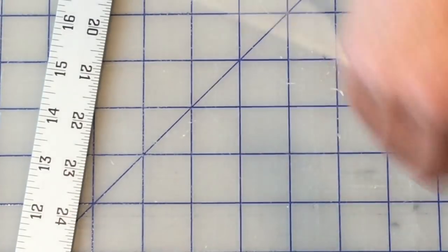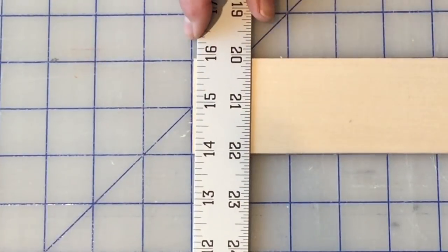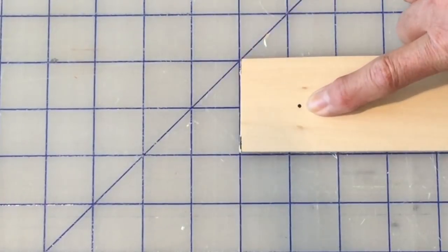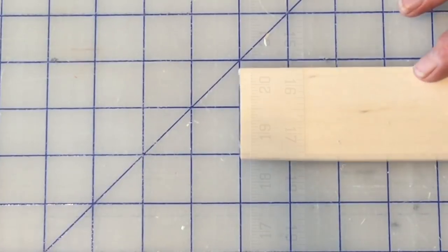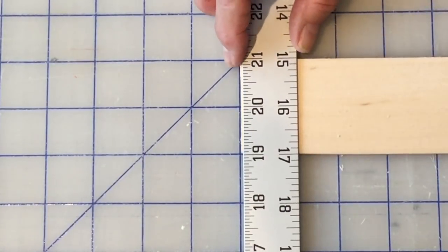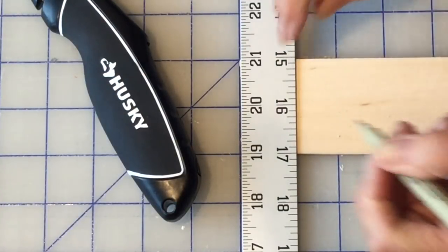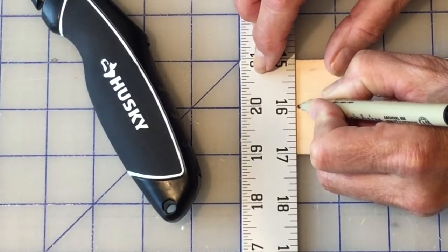And do the same on the other side. You've drawn your dot on this side, turn it over and mark your dot on the other side as well, because we're going to want to score on both sides this time.